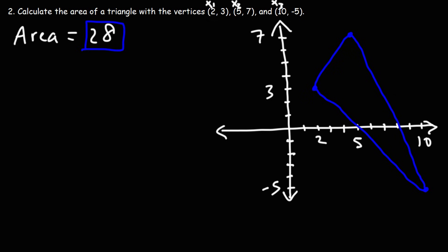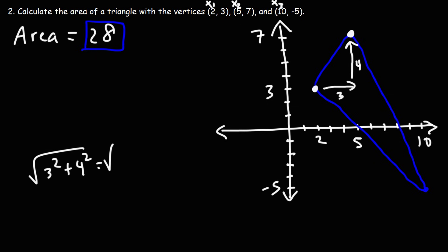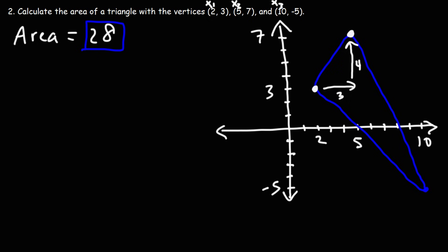We need to determine the length of each side and then use Heron's formula to get the area of the triangle. Going from point (2,3) to (5,7), we travel 3 units to the right and 4 units up — this forms a 3-4-5 right triangle. Using the Pythagorean theorem: square root of 3 squared plus 4 squared equals square root of 25, which is 5. So side AB is 5 units. Now going from (5,7) to (10,-5), we travel 5 units right and 12 units down, giving us the 5-12-13 triangle. Square root of 25 plus 144 equals square root of 169, which is 13.